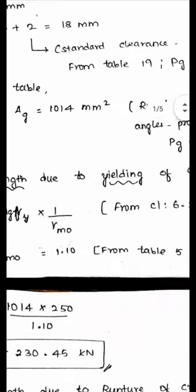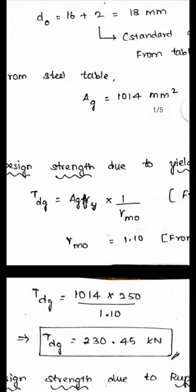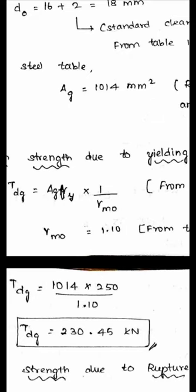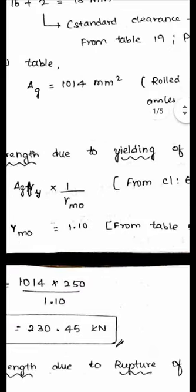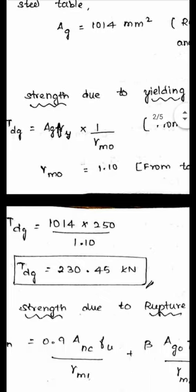First, we calculate the design strength due to yielding of the cross section. TD is the least of TDG, TDN, TDP1, and TDP2. TDG = AG × Fy × (1/γM0), as per clause 6.2, page 30. Where γM0 = 1.1 from Table 5, page 30. AG = 1014 mm² from the steel table, Fy = 250 MPa. TDG = 1014 × 250 / 1.1 / 1000 = 230.45 kN.